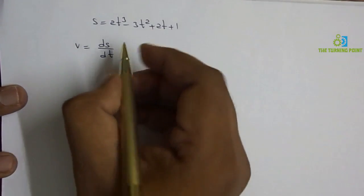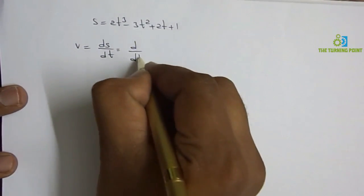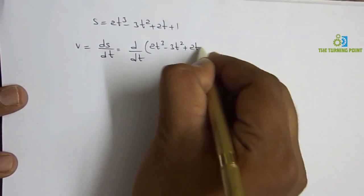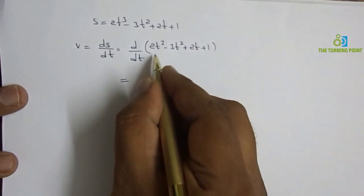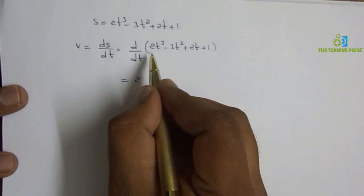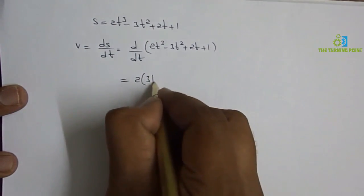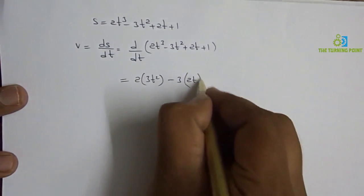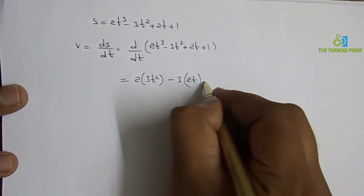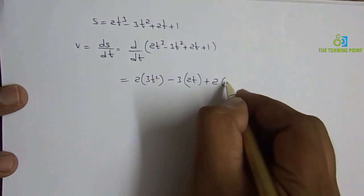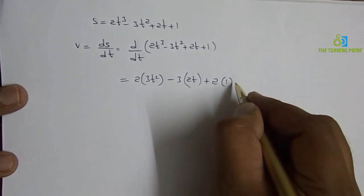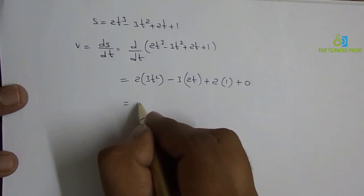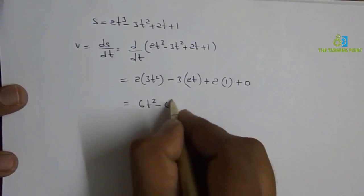So d by dt of displacement, which is 2t cubed minus 3t squared plus 2t plus 1. Differentiating: 2 into differentiation of t cubed is 3t squared, minus 3 into differentiation of t squared is 2t, plus differentiation of 2t is 2 into 1, and the differentiation of constant 1 is 0. Simplifying, the velocity equation is 6t squared minus 6t plus 2.